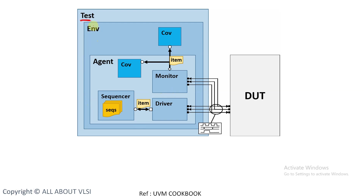This is the typical test bench structure of a UVM test bench. At the top we have a test, which contains the environment. The environment can contain a coverage collector and an agent — a new component in UVM. The agent contains a sequencer, driver, and monitor. The agent communicates with the DUT. The driver converts transaction-based items into pin-level transactions, and the monitor collects responses from the DUT. The agent is protocol-specific and is adjusted according to the protocol.